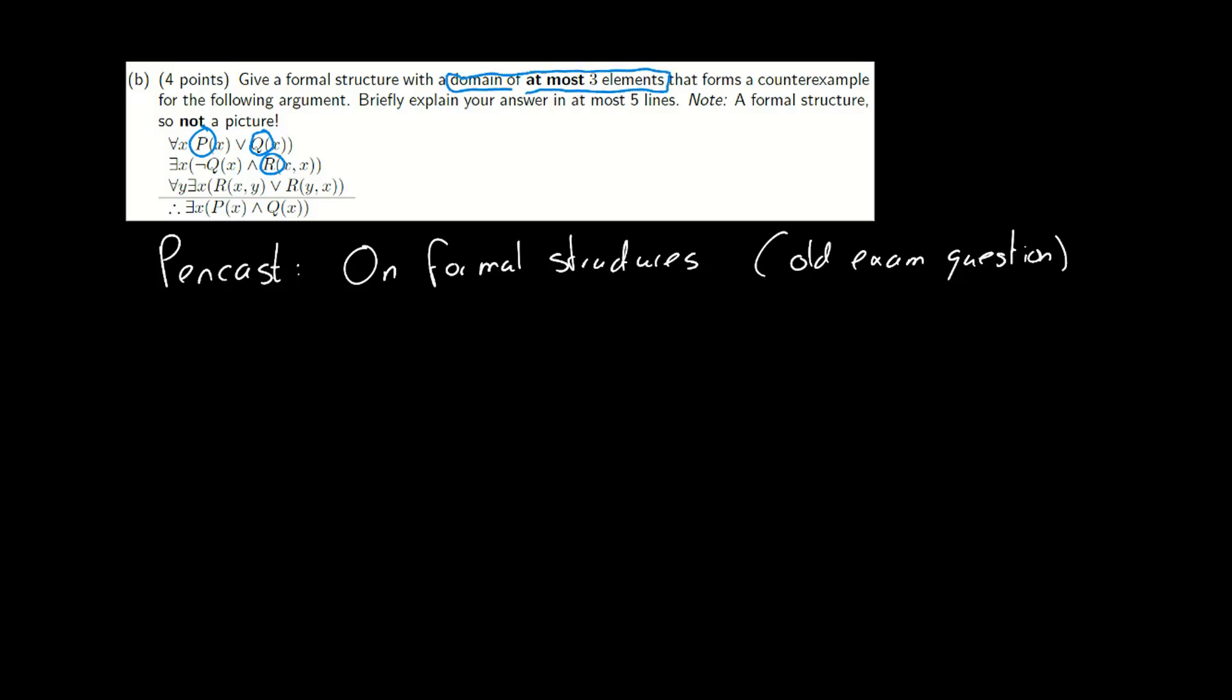Furthermore, we have a constraint in our domain. We're not allowed to have more than three elements. So we need a domain, a p, a q and an r. We start with a domain of just one element, just a, and then we'll see how it goes from there.